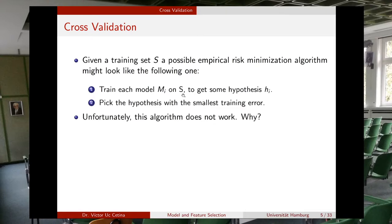If you read carefully, it says train your model on your dataset S, and then you will select the model with the smallest training error. The problem with this is that you can very easily overfit your model, because in the case of polynomials you can simply increase the number of terms, increase the degree of your polynomial, and at some point you will manage to reduce the error with your training set. So this is not a good idea.